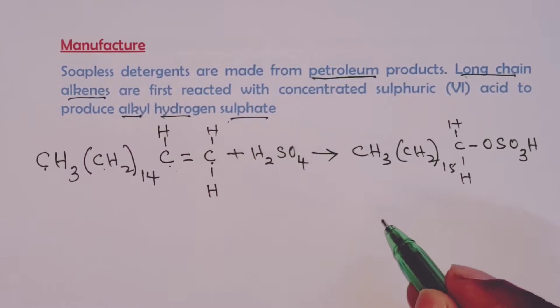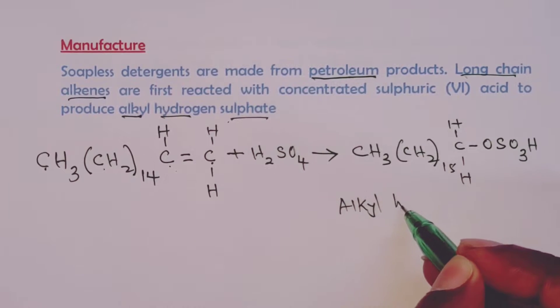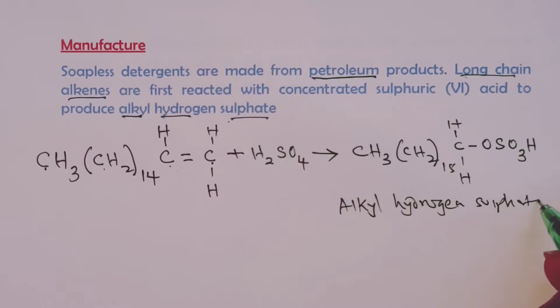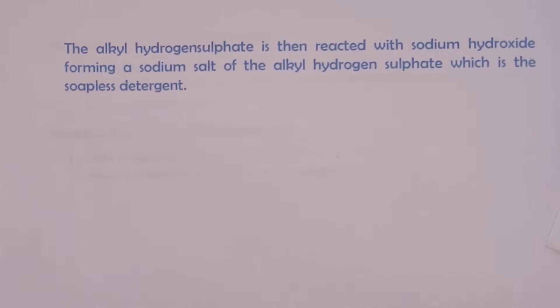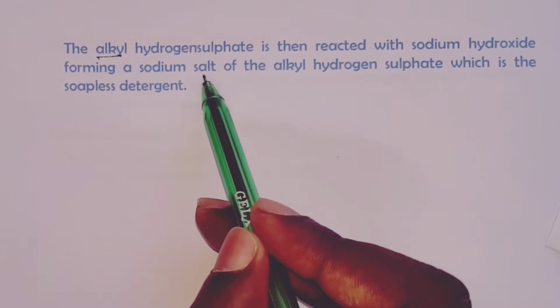This compound that is formed here is what we call alkyl hydrogen sulfate. Let us see what we do next after obtaining the alkyl hydrogen sulfate from the reaction between the long-chain alkene and concentrated sulfuric acid.